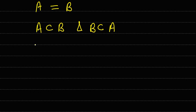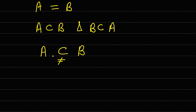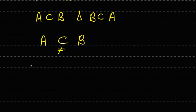There is another notation we use: if set A is a subset of B but it is a proper subset, we represent it with a special symbol. Some books also represent this by putting the equal-to sign and crossing it out. This representation means that A is a subset of B but A is properly contained in B.